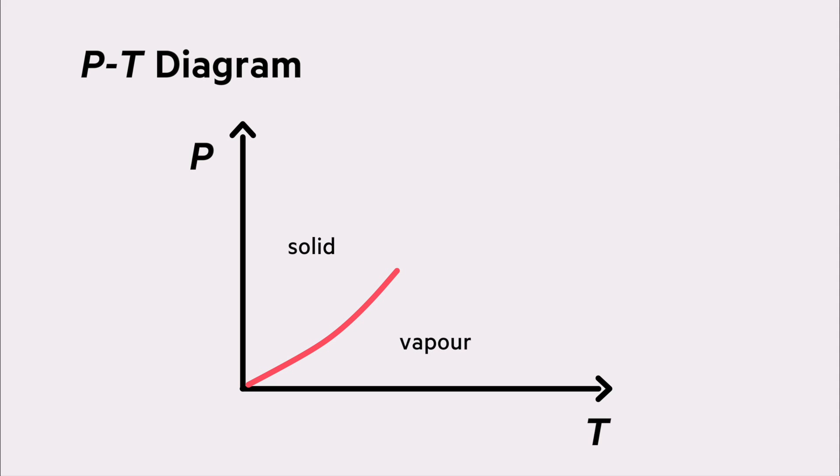The sublimation line ends at the triple point, which is the point where all three phases coexist. There is a melting line between the solid and the liquid phase and the vaporization line between the liquid and the gas phase. The vaporization line ends in the critical point.